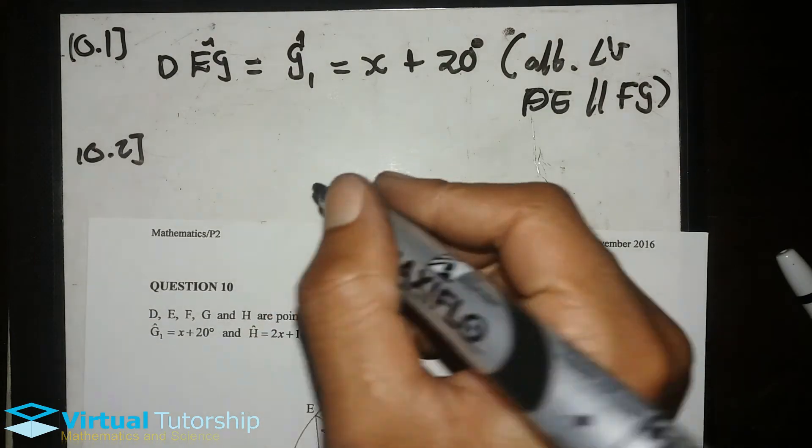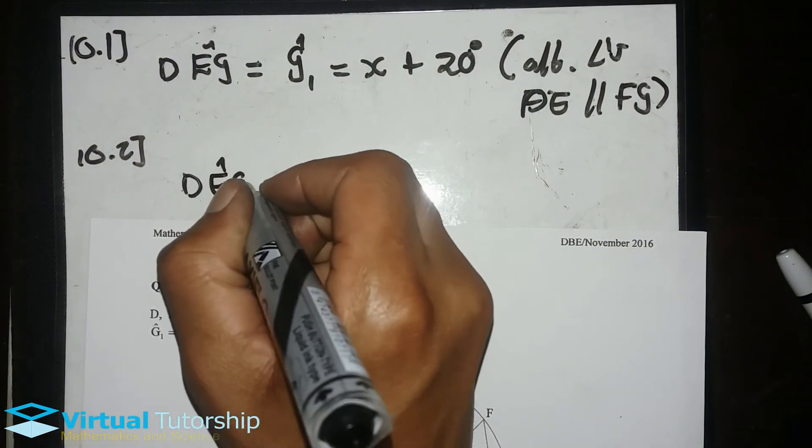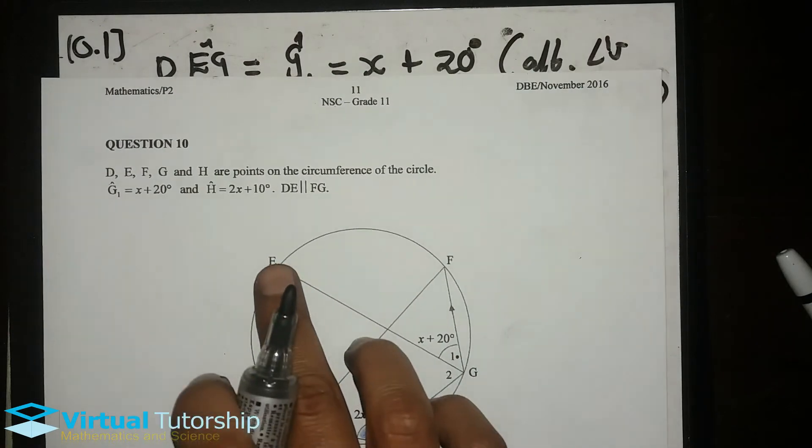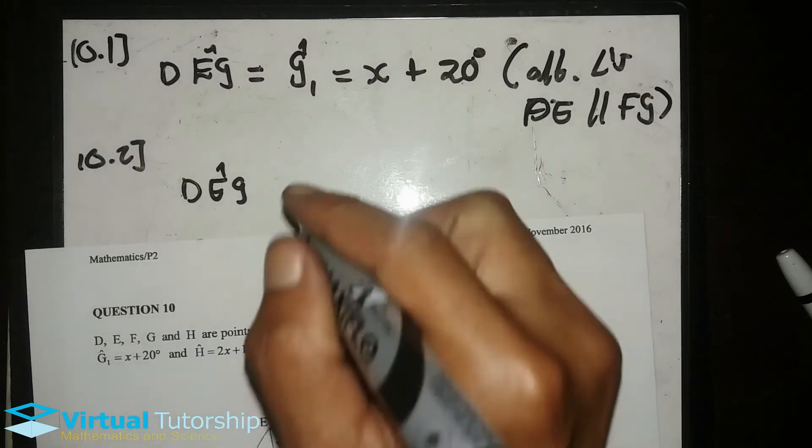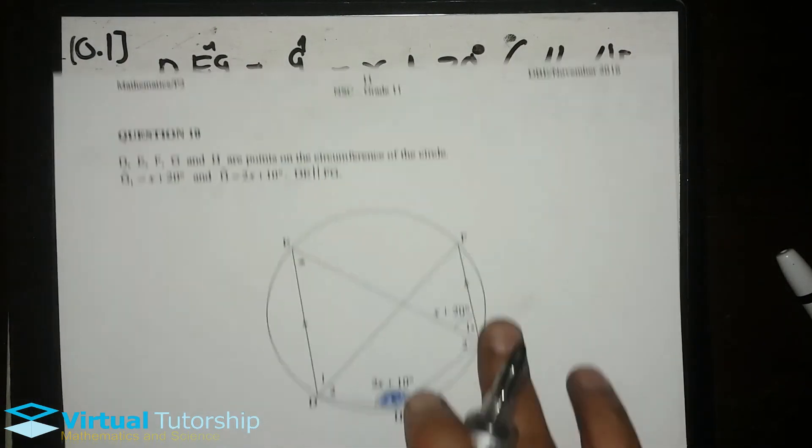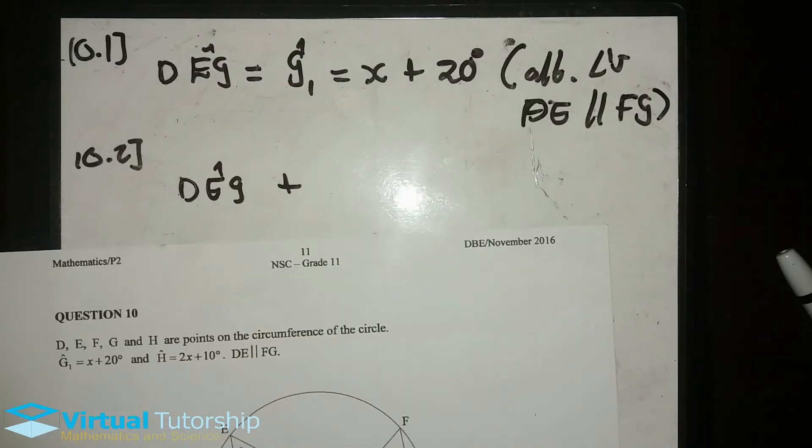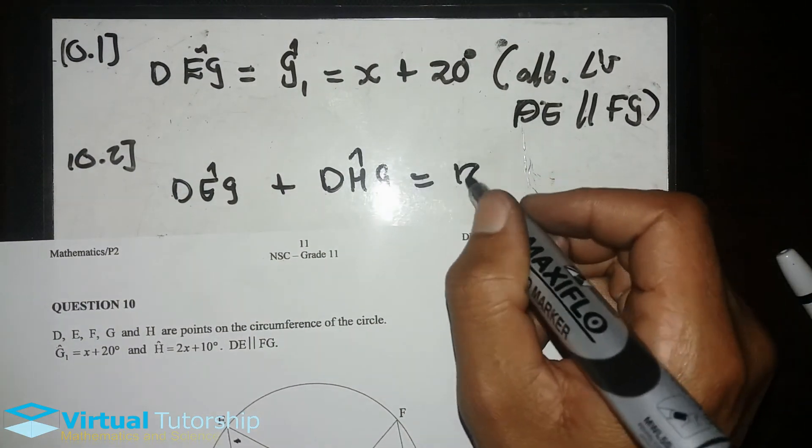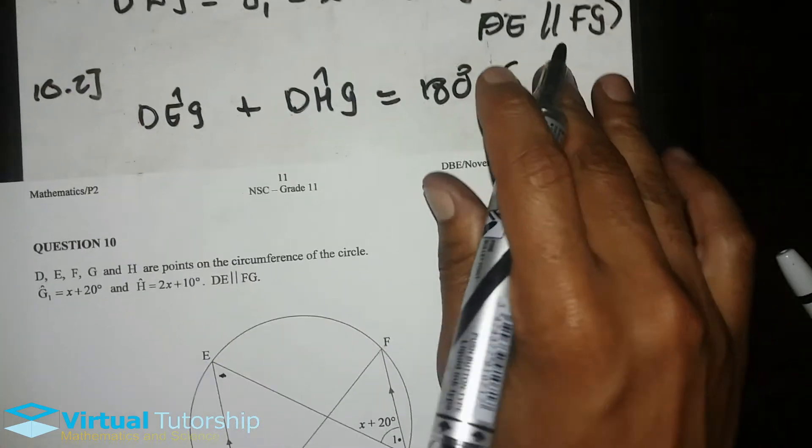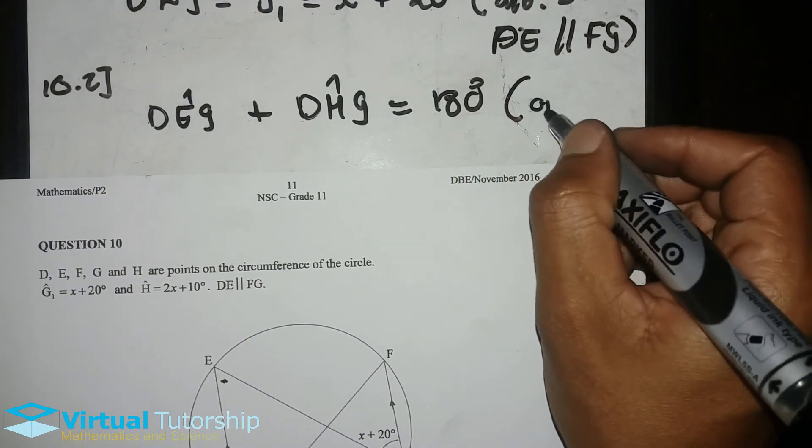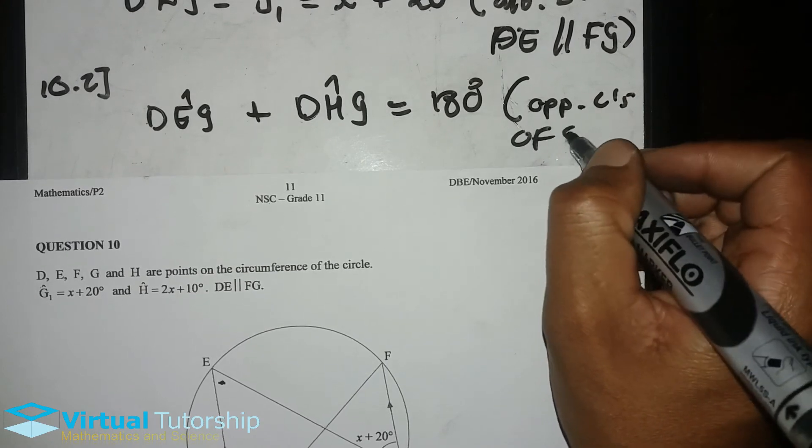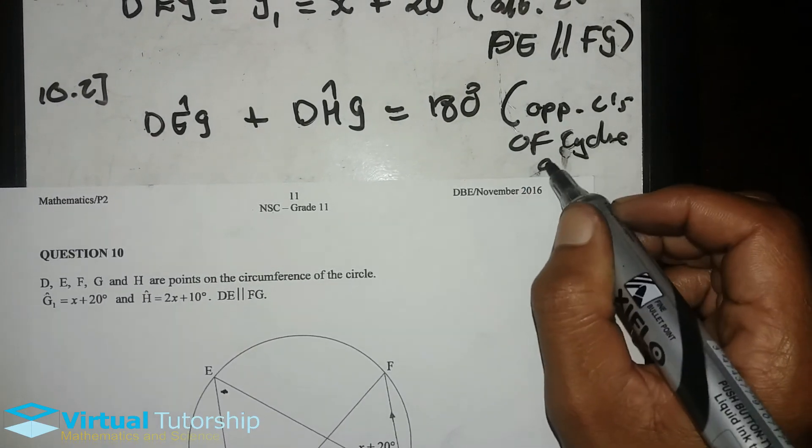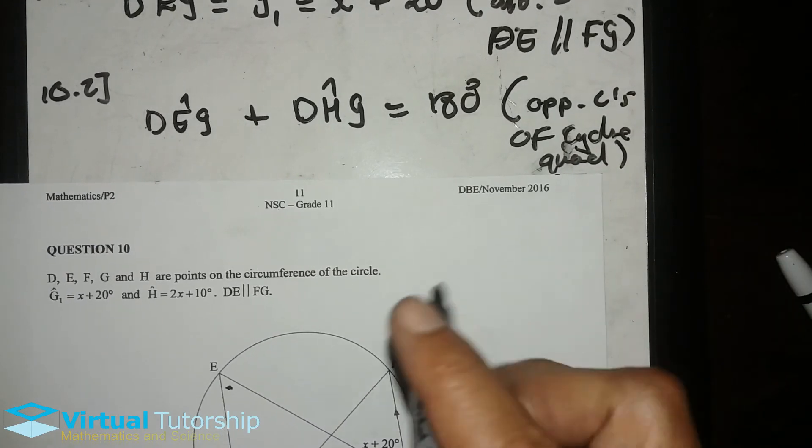Now, check out. So, this angle DEG plus DHG equals 180 degrees. The reason for that, opposite angles of cyclic quad.